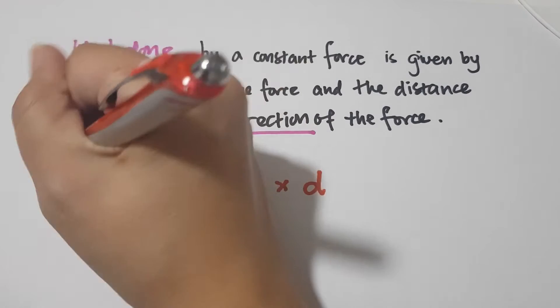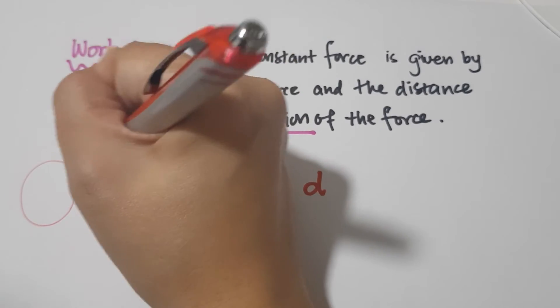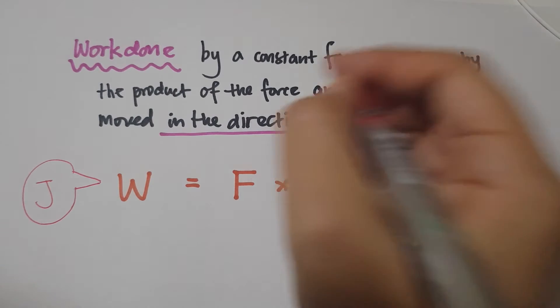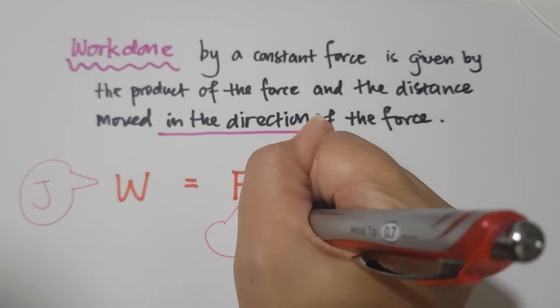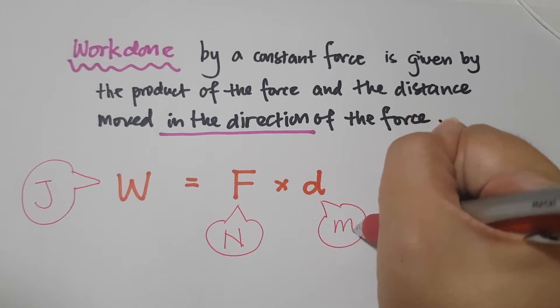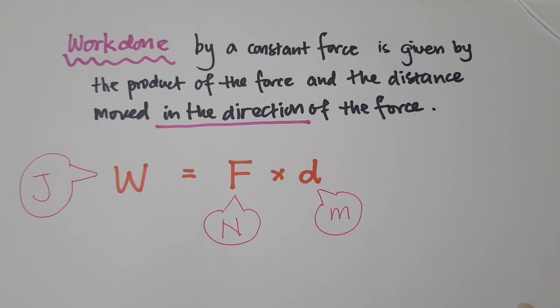So this is work done and the unit is in joules, force is in newton, and distance is in meter. So these are the SI units for work done, force, and distance.